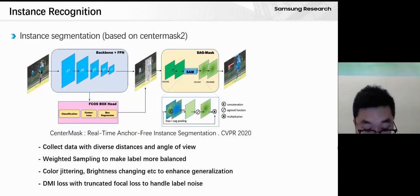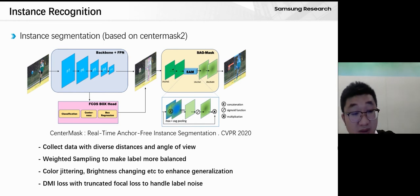The most important part of our work is instance recognition. We use a state-of-the-art mask method published in CVPR 2020. To make sure this method works, we collect data from different distances and angles, and make the training data labels more balanced.